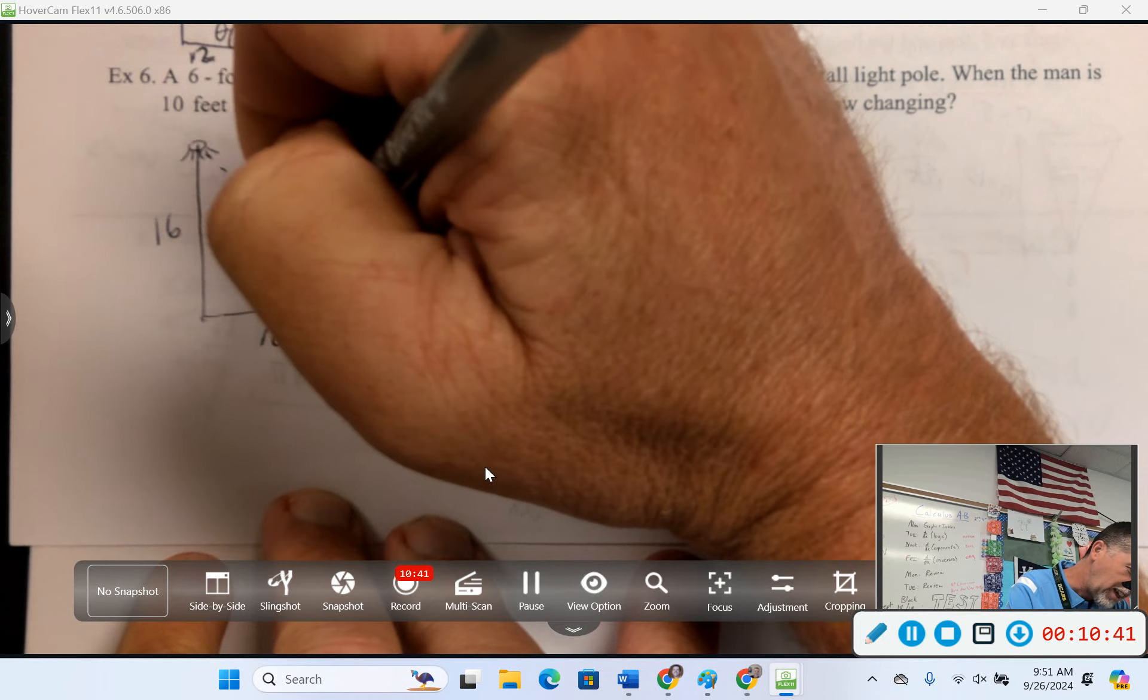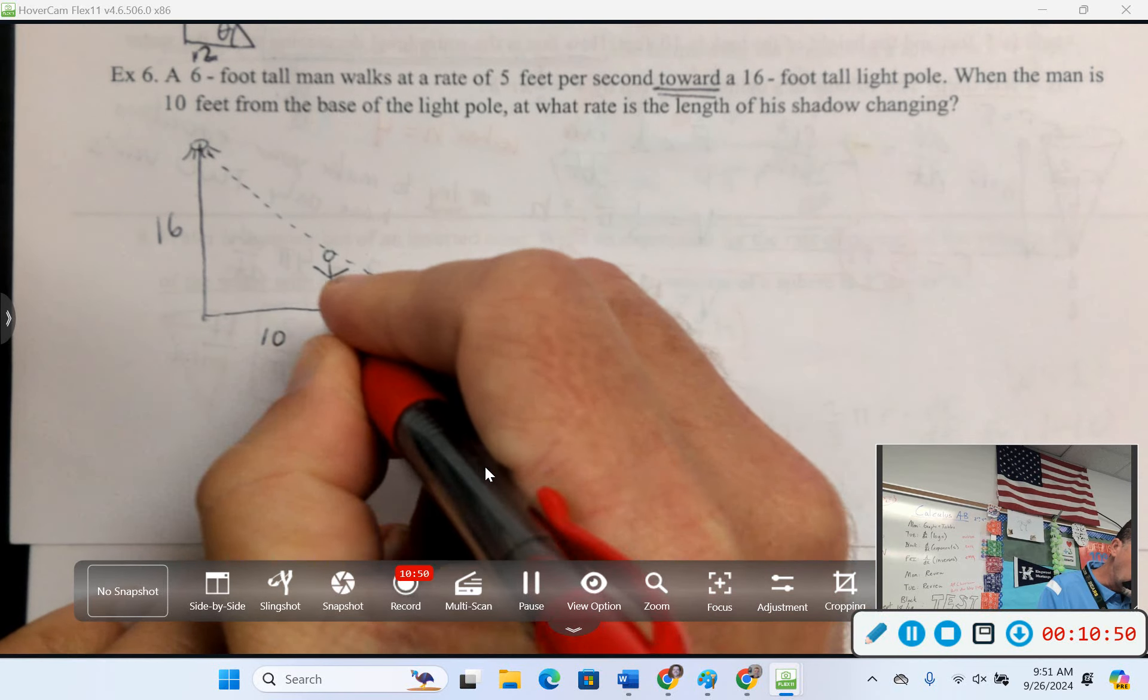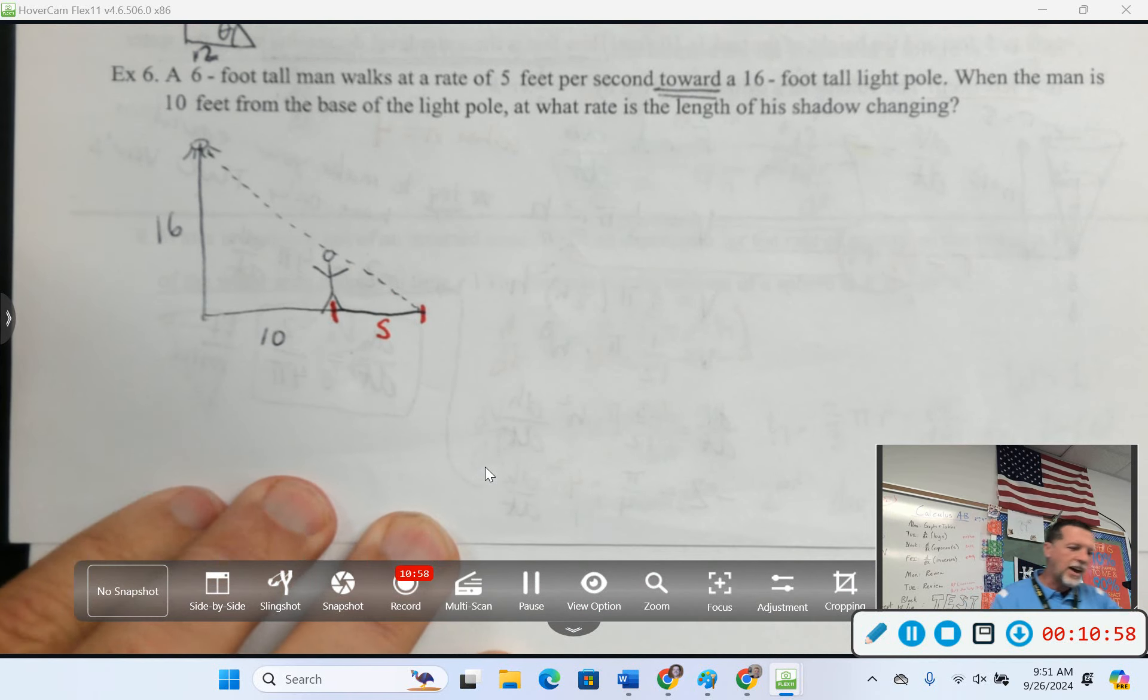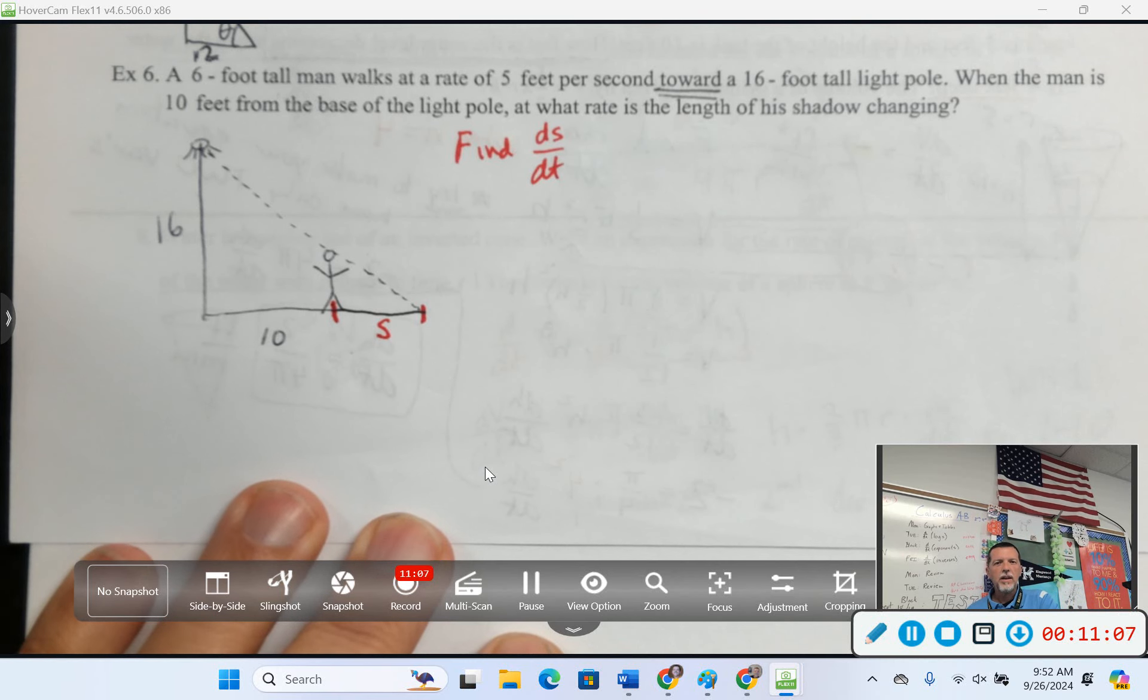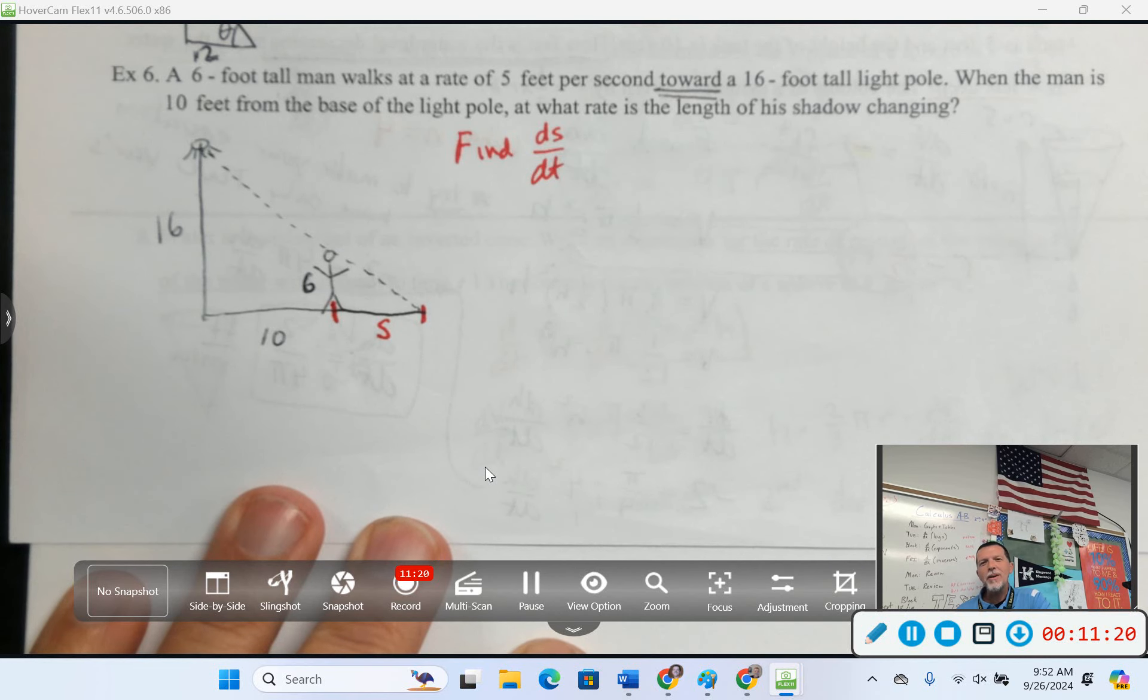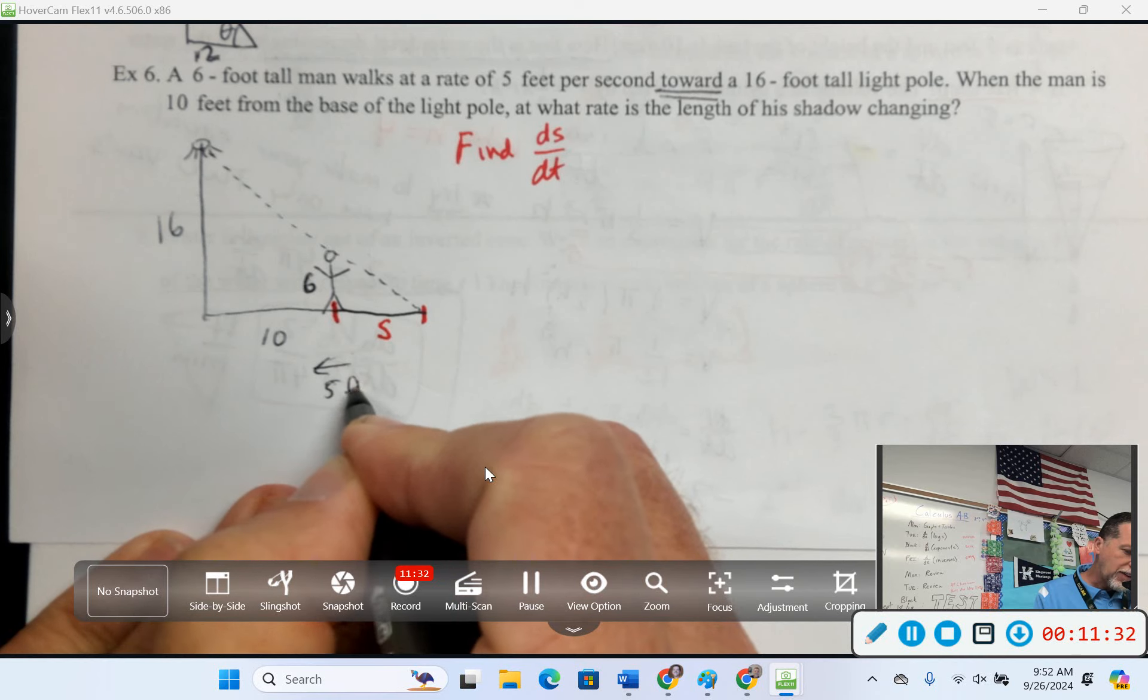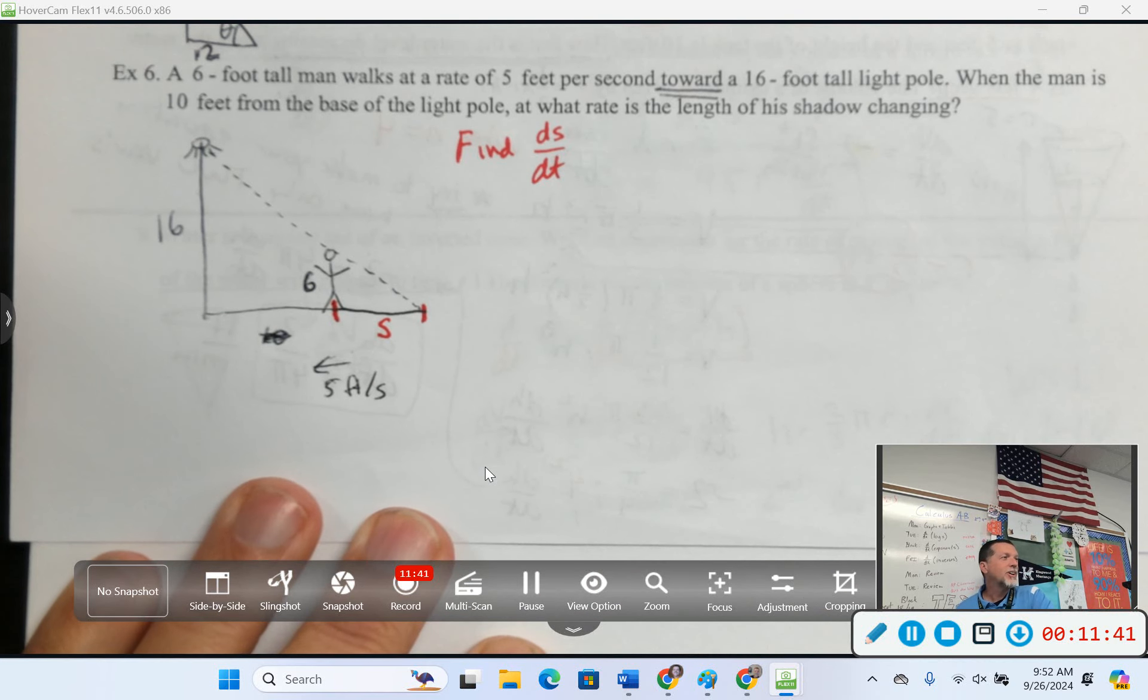At what rate is the length of his shadow changing? So, here's the light. Here's the shadow. In fact, let's label that. There to there is S. Let's call that the shadow. So, we want to find dS/dt. The guy is 6 feet tall. I think there's a number I put on there that maybe I shouldn't have put on there because it's changing. 10. So, we'll use 10. But that's not always 10. The guy is walking this way at 5 feet per second. So, I don't want to call that 10. I want to call that something else. What do you want to call it? A works fine.